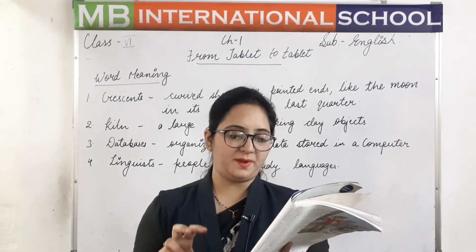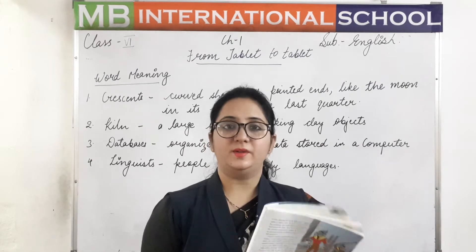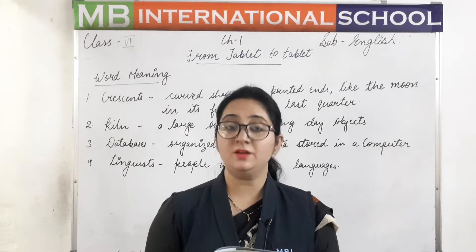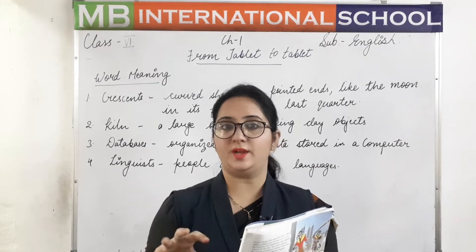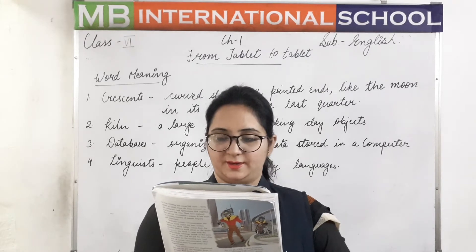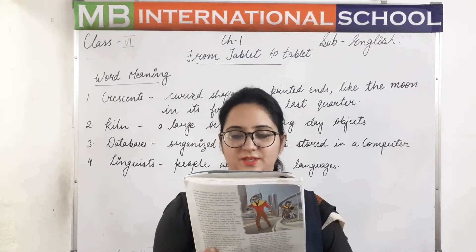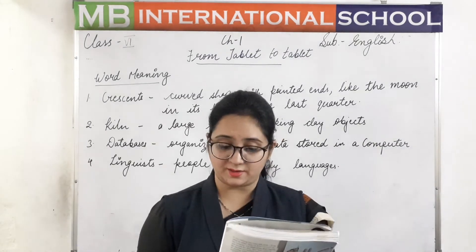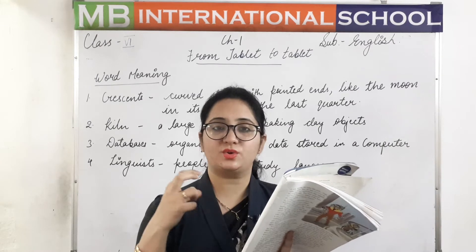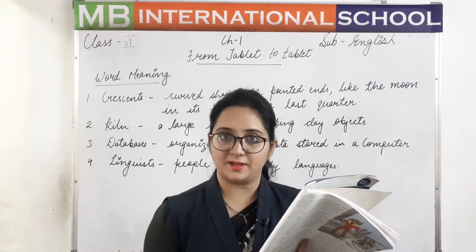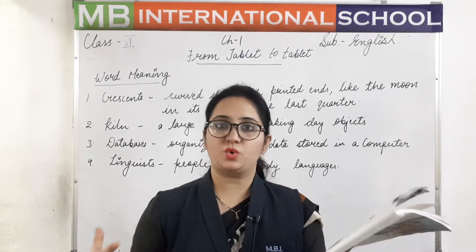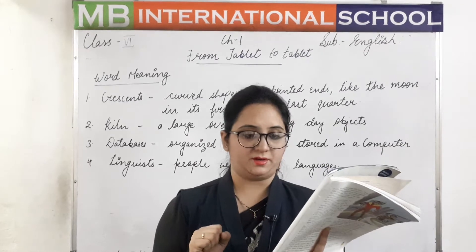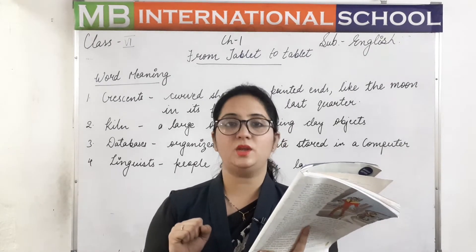He made the piece in a clean fire kiln — kiln means a large oven for baking clay objects. The clay objects were baked in the oven so they could last for years without breaking. Six thousand years later, his handiwork was found at an excavation site in Iraq.